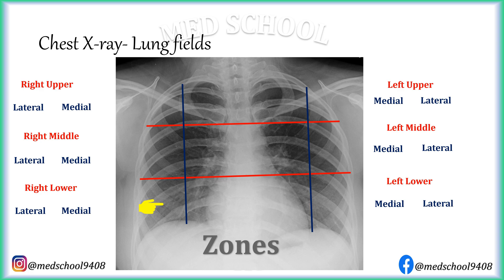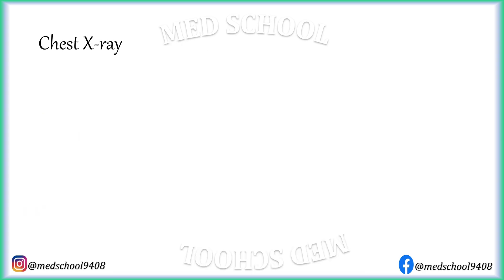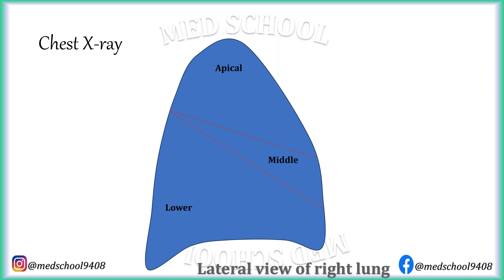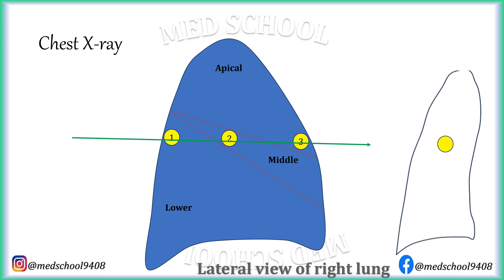Now let's understand why lungs are divided into zones and not lobes on chest X-rays. Imagine a lateral view of the right lung — it is divided into three lobes: upper, middle, and lower lobe. Now imagine three similar consolidations: consolidation 1 in the upper part of the lower lobe, consolidation 2 in the middle lobe, and consolidation 3 in the lower part of the upper lobe. Even though their actual locations are different, on a chest X-ray each consolidation will produce a similar opacity at the same location. Similar overlaps are present in other areas of right and left lung. That's why lobular location of pathologies cannot be ascertained on chest X-ray, and to avoid confusion, lung fields are divided into zones and not lobes.